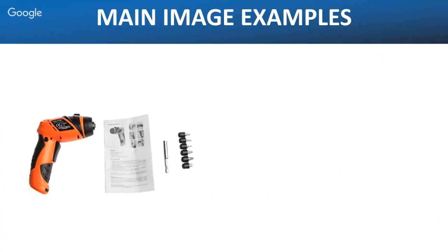Here's an example of a bad main image — some crumpled instruction paper, hard-to-read text, a handheld device where you can barely make anything out. If I was in the market to buy a handheld drill and I saw this, I'd skip straight past it. Now here's the same scale comparison: the one on the right is a killer hero shot. It fills the screen, vibrant colors, no white space top or bottom. You can clearly see the product. The one on the left is a poor effort — don't make your main image like that.